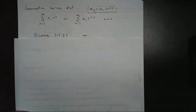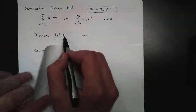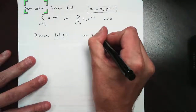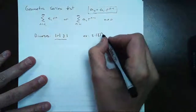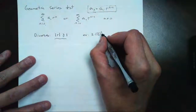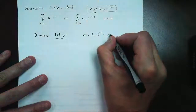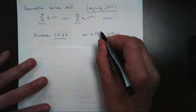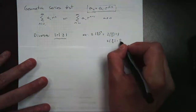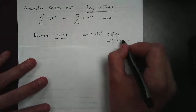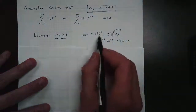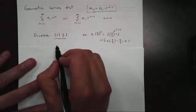The answer is very simple. For divergence, we say the common ratio must be bigger than 1. For example, take 2 times (3/2)^n. When n = 1, we get 2 times 3/2, which is 3. When n = 2, we get 2 times 9/4, which is 4.5. As n gets larger, the values are getting bigger, so this is going to diverge.